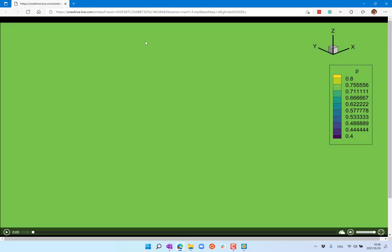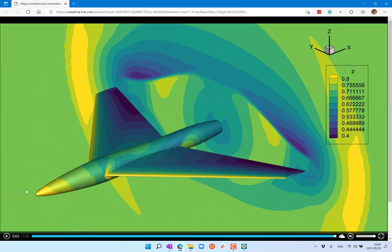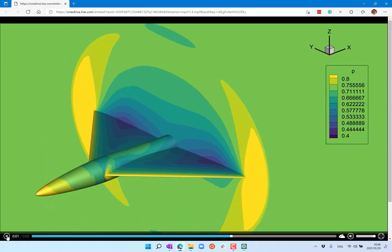All right, so last lecture we looked at the pressure field and the velocity field around the supersonic airplane and started to derive a set of equations that governs the pressure around an airplane. So this is what we looked at last lecture.